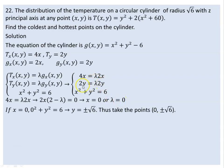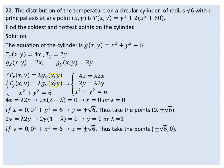From the second Lagrange equation: 2y equals lambda times 2y, which gives 2y times (1 minus lambda) equals 0. So again we have two options: y equals 0, or lambda equals 1. When y equals 0, from the cylinder equation x squared equals 6, so x equals plus or minus radical 6. The points plus or minus radical 6, 0 must also be considered.